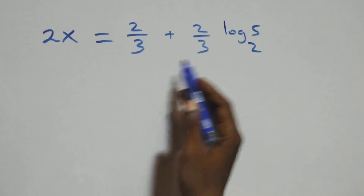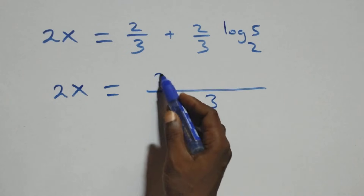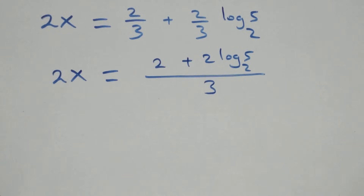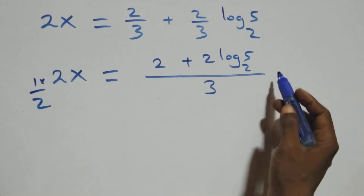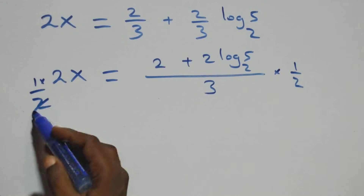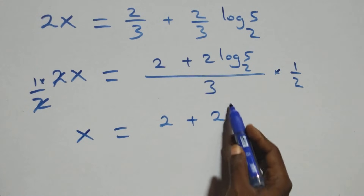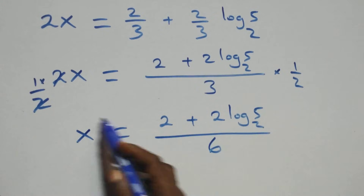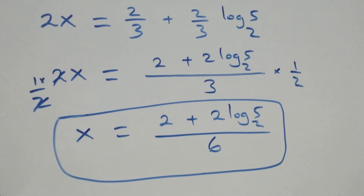Next, we bring this together as one fraction. So 2x equals, with denominator 3, we have 2 plus 2 log 5 base 2, all over 3. Then multiplying both sides by one half — the 2s cancel — giving us x equals 2 plus 2 log 5 base 2, all over 6.